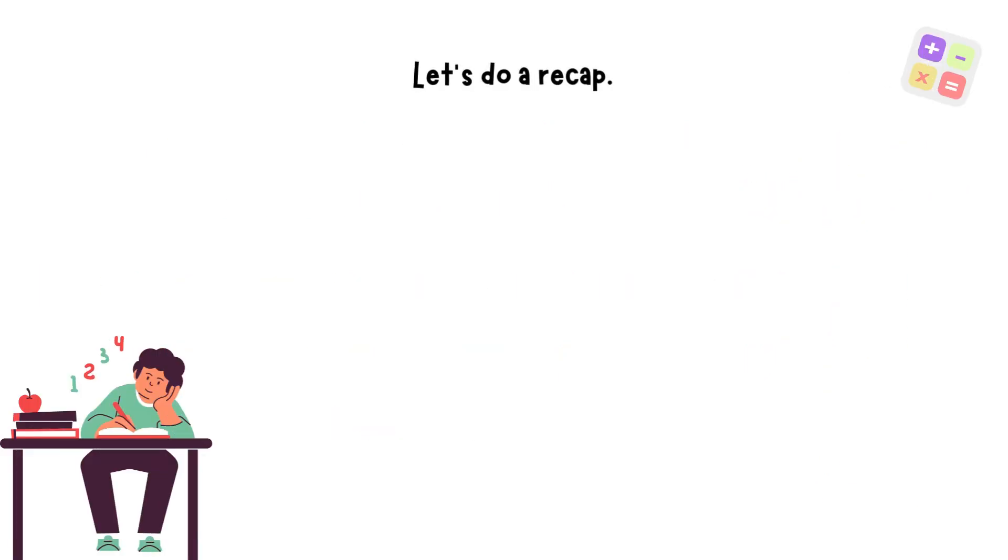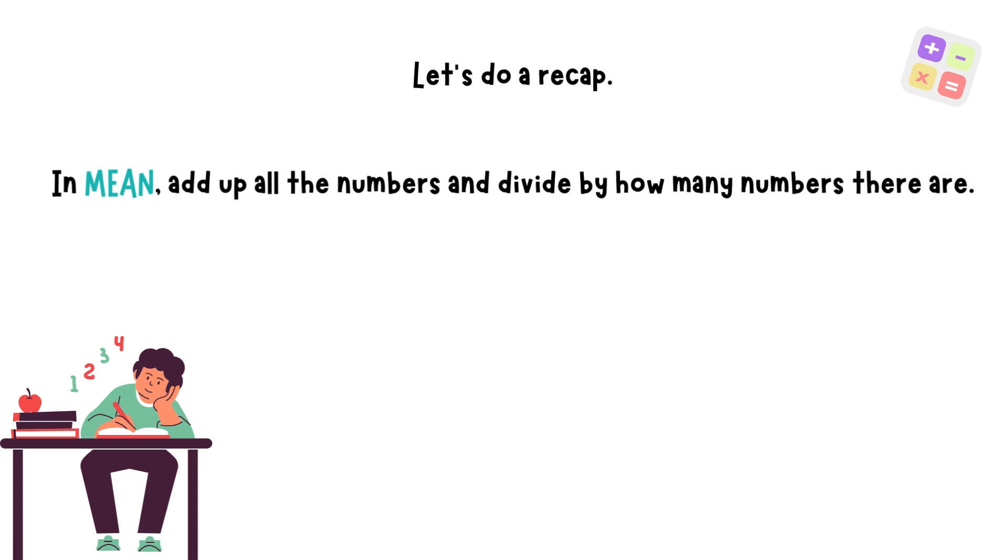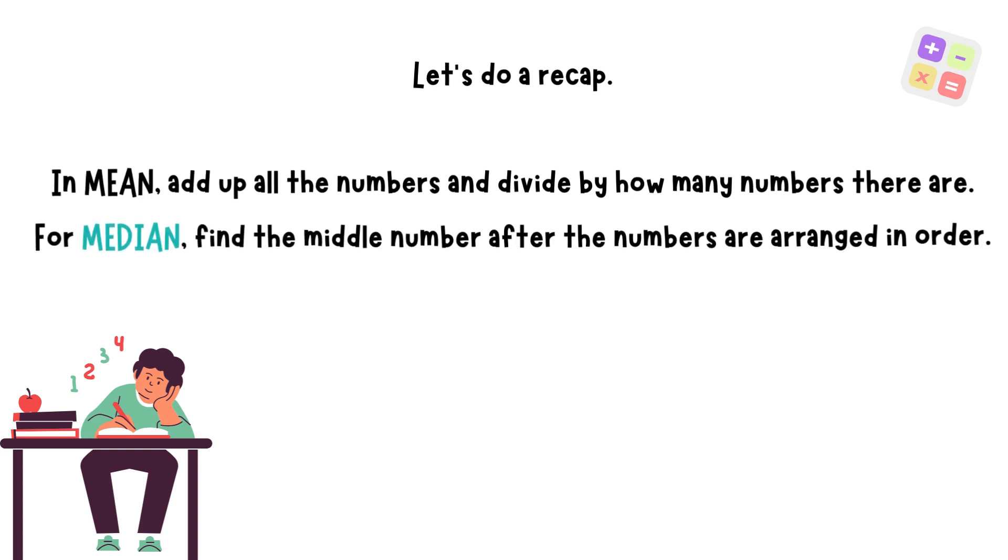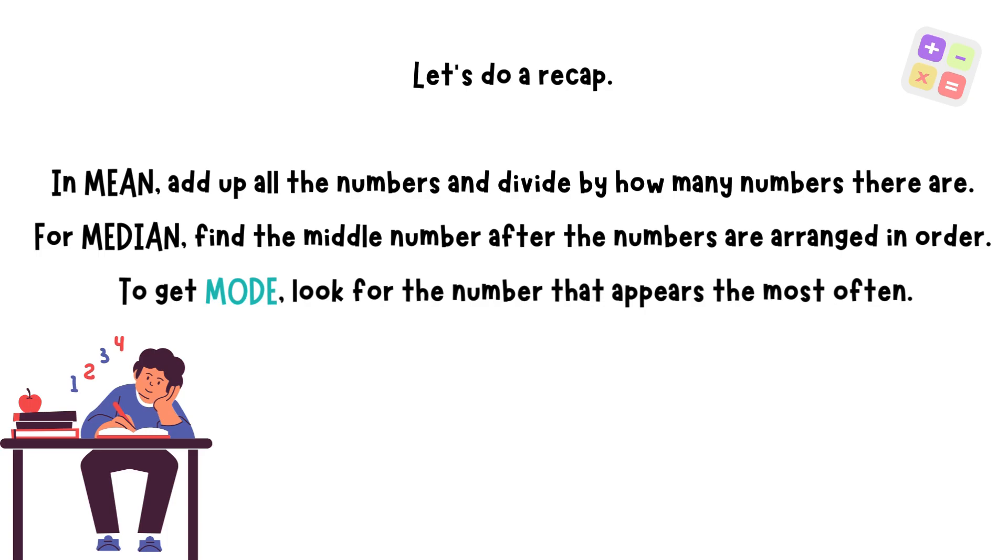Let's do a recap. In mean, you add up all the numbers and divide by how many numbers there are. For median, find the middle number after the numbers are arranged in order. To get mode, look for the number that appears most often.